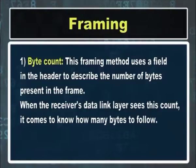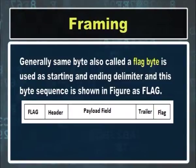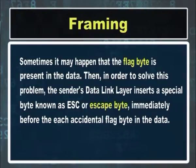We will look at four framing methods. The first method is byte count. This framing method uses a field in the header to describe the number of bytes present in the frame. When the receiver's data link layer sees this count, it knows how many bytes to follow. The next method is flag bytes with byte stuffing. In this case, each frame starts and ends with a special byte sequence — generally the same byte, called a flag byte, is used as starting and ending delimiter. Sometimes the flag byte may be present in the data. To solve this problem, the sender's data link layer inserts a special byte known as an ESC byte immediately before each accidental flag byte in the data.